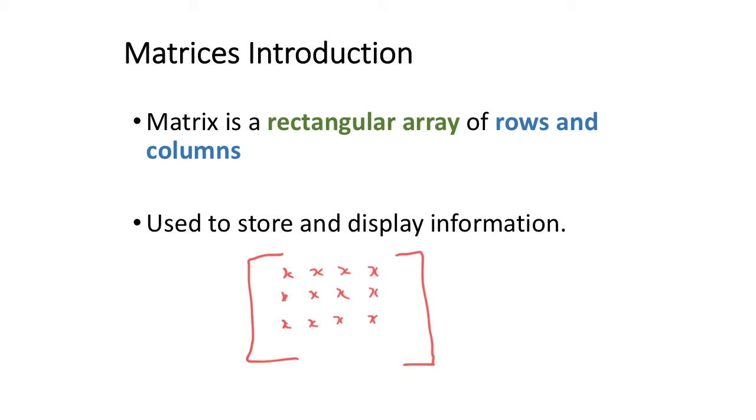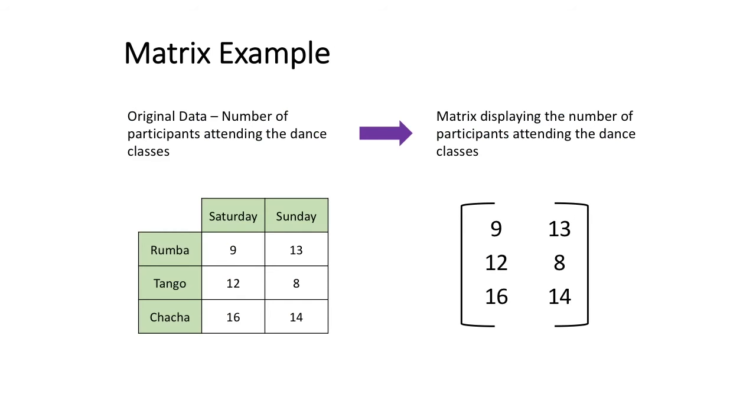Let's have a look at an example of a matrix. In the example we're starting off with original data which is in a table and that data represents the number of participants attending the dance classes.